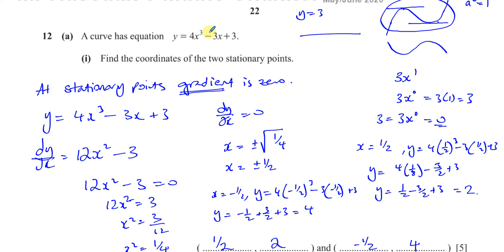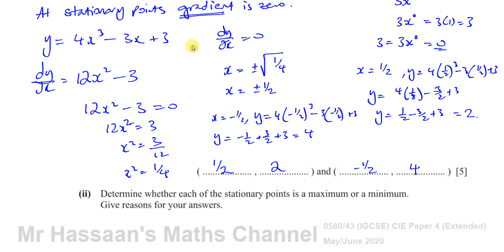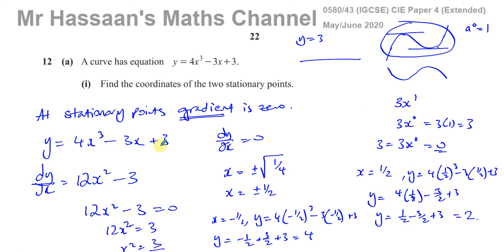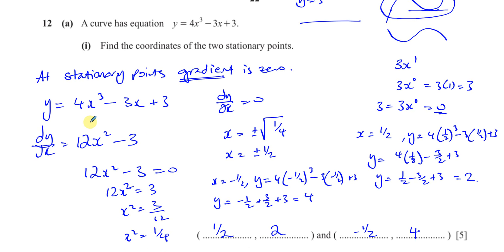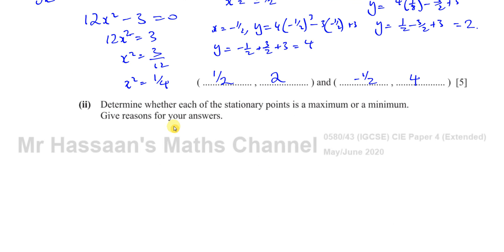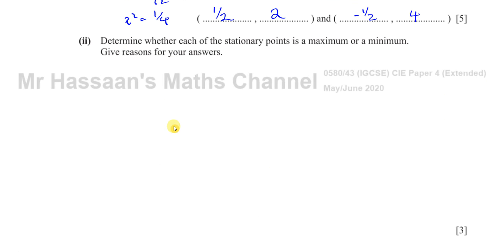To summarise: to find stationary points, take the gradient function dy/dx and set it equal to 0. Solve that equation to find the x values where the gradient is 0, then find the y coordinates for each x value to get the full coordinates of the stationary points.